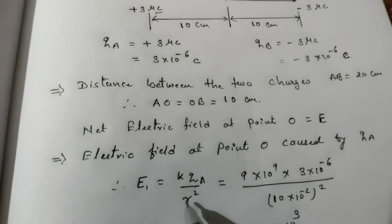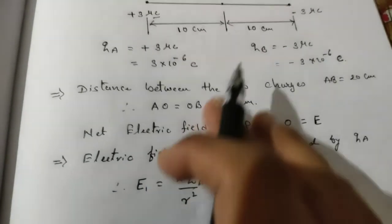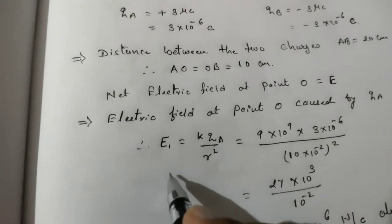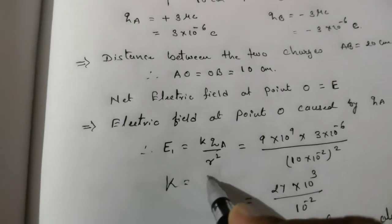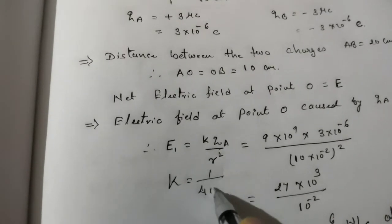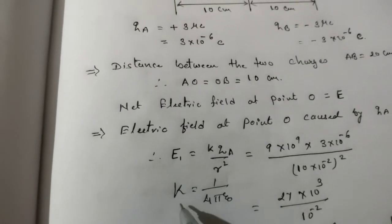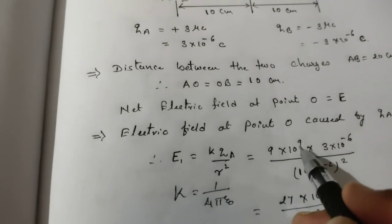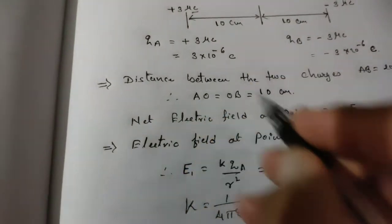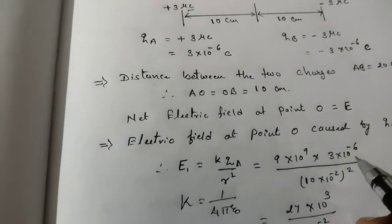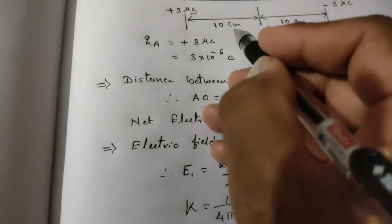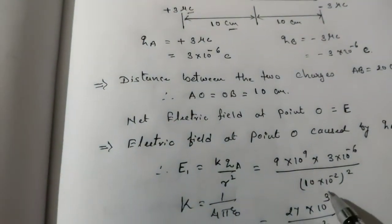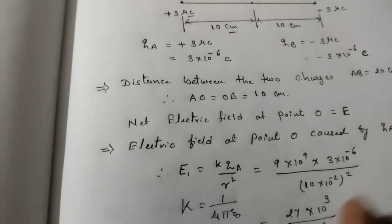By using this formula we'll solve this numerical. K = 1/(4πε₀), which equals 9 × 10⁹ SI units. QA = 3 × 10⁻⁶ coulomb. R is given in centimeters, so 10 × 10⁻² meters, whole squared.